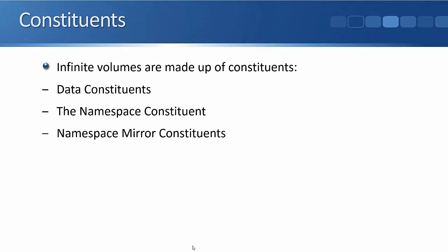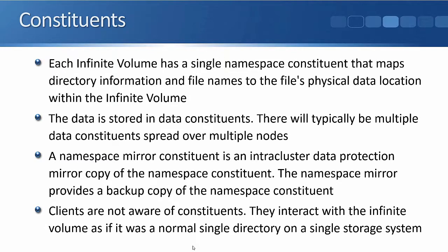Infinite volumes are made up of constituents: data constituents, a namespace constituent, and namespace mirror constituents. Each infinite volume has a single namespace constituent that maps directory information and file names to the file's physical data location within the infinite volume. The namespace constituent is in control of finding which aggregate holds the file that a client wants to access.